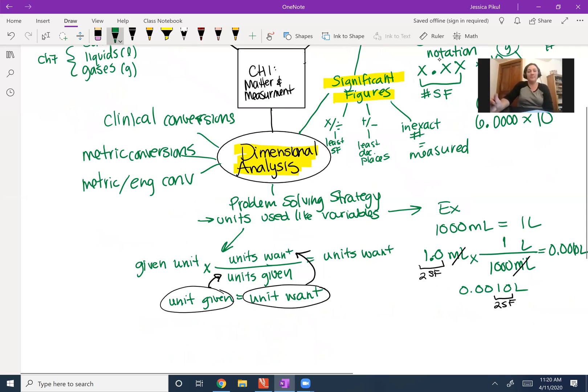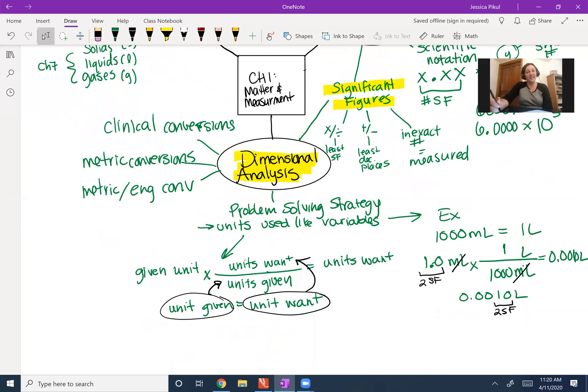So when I'm looking at this, I can also convert it into the scientific notation. That would be 1.0 times 10 to the negative three liters. Again, I'm still just reporting two significant figures.